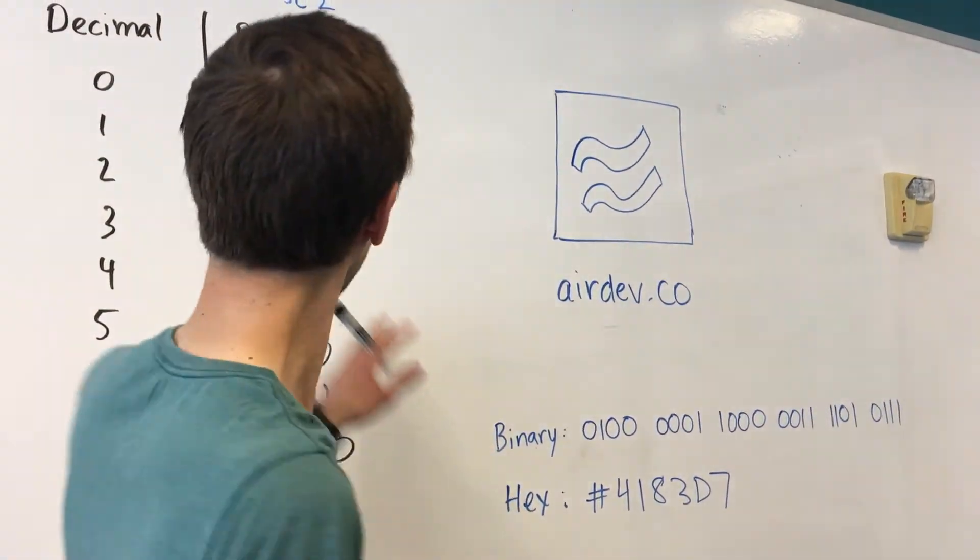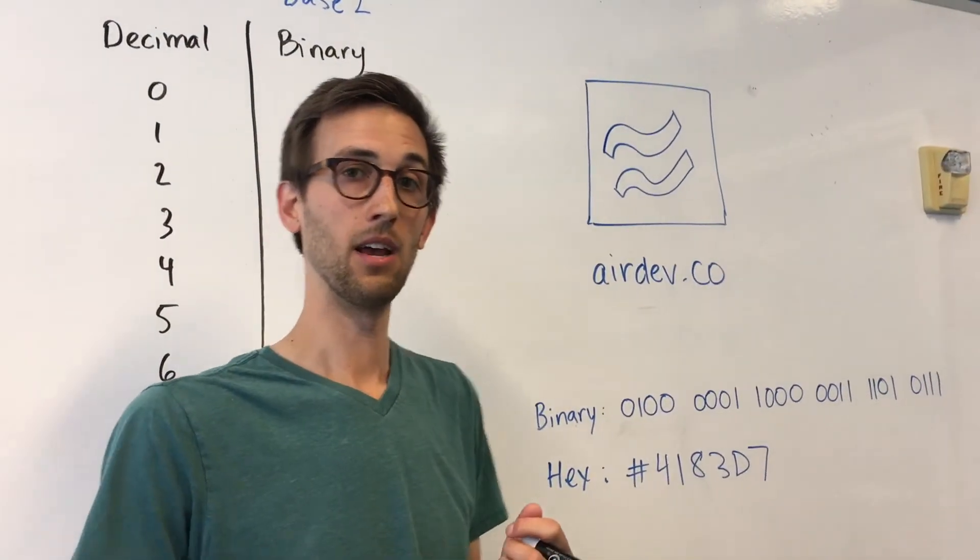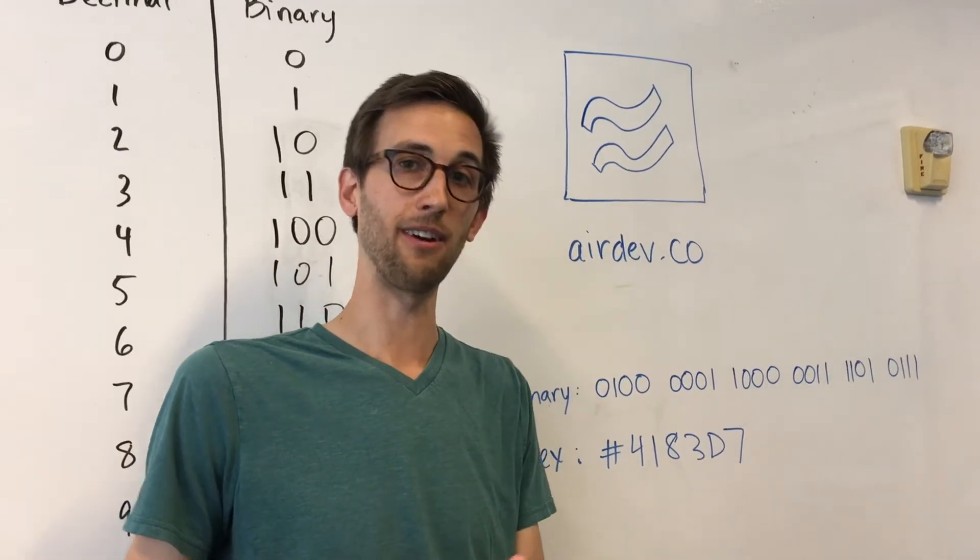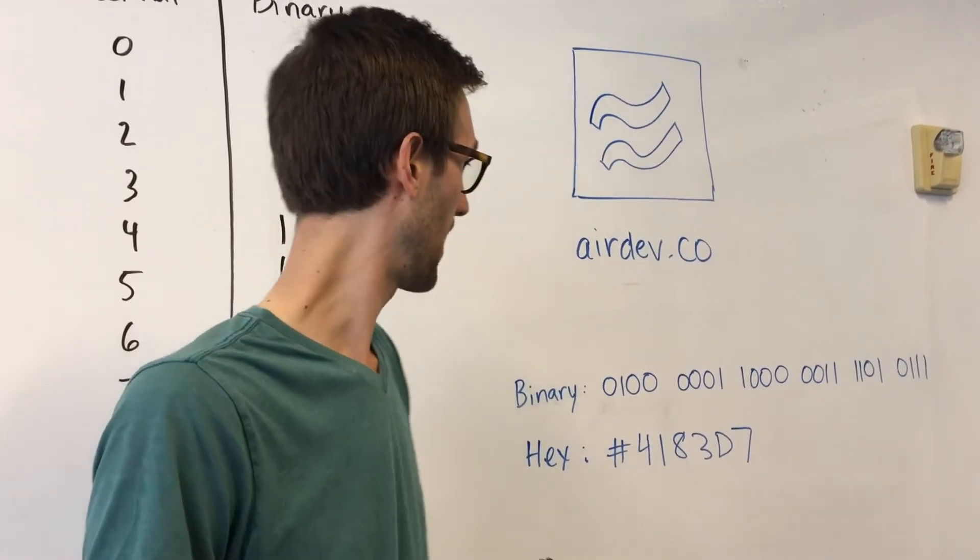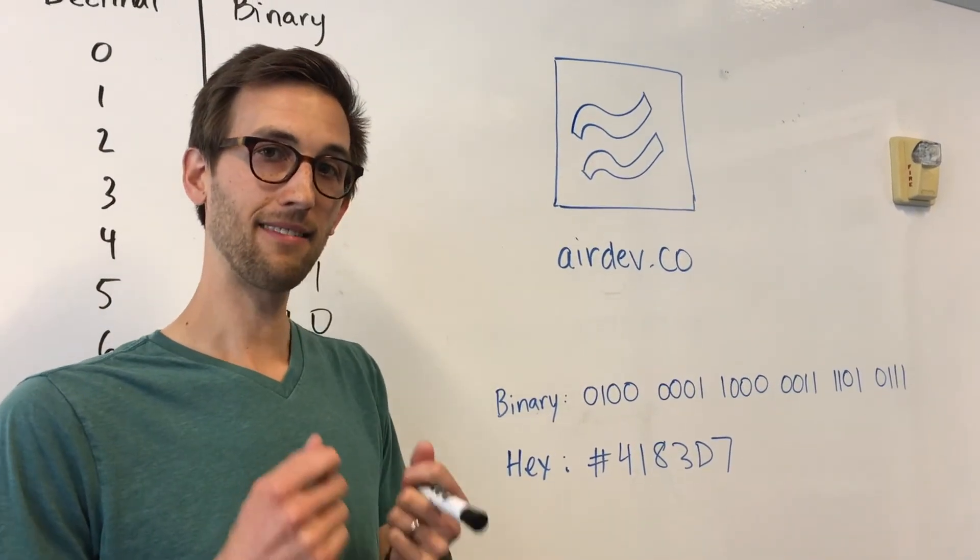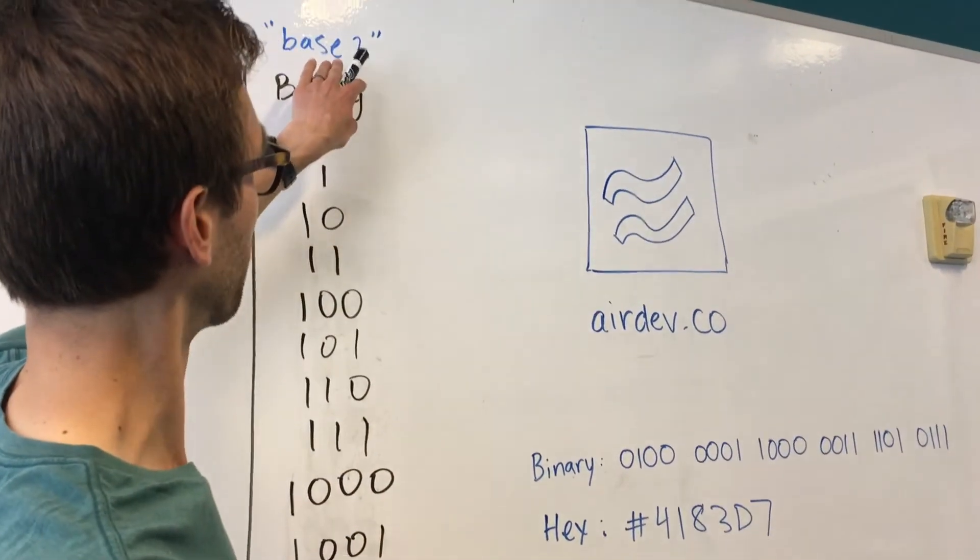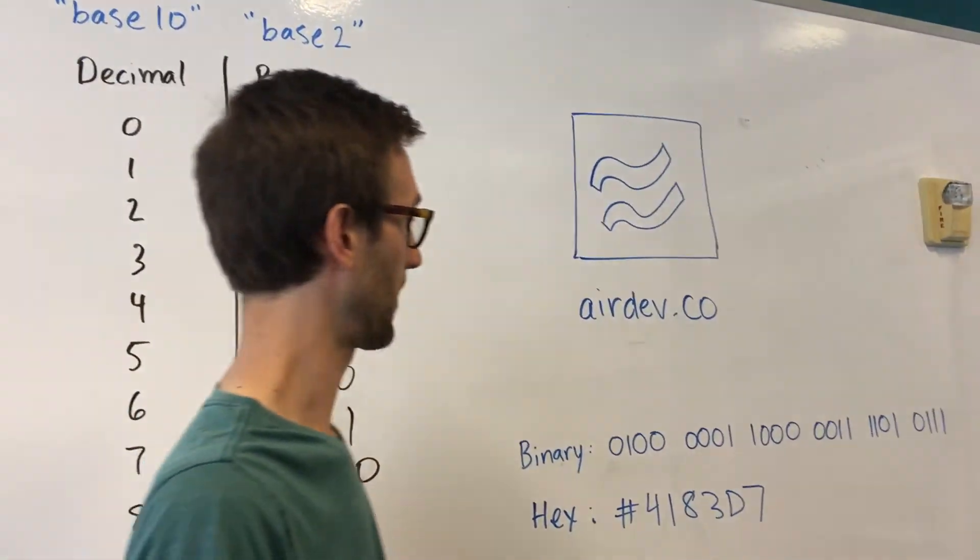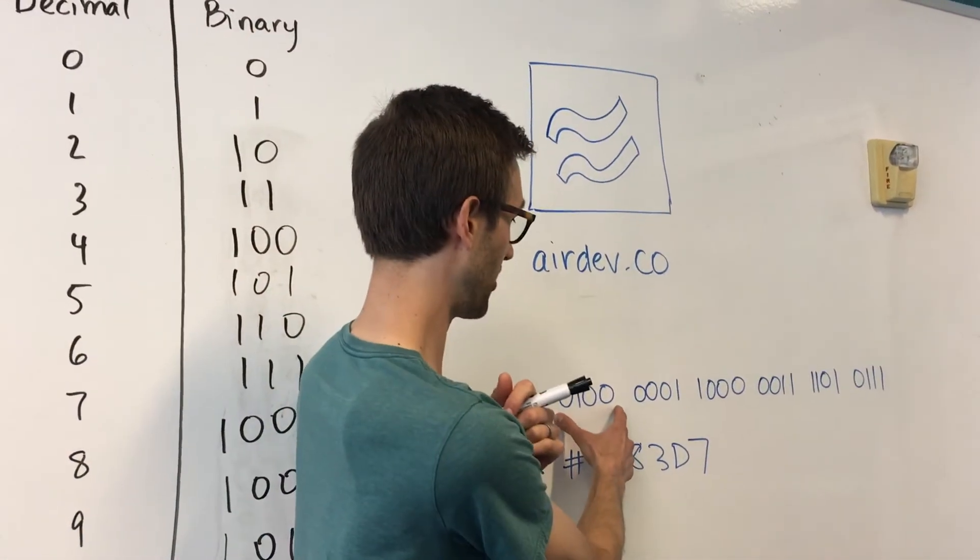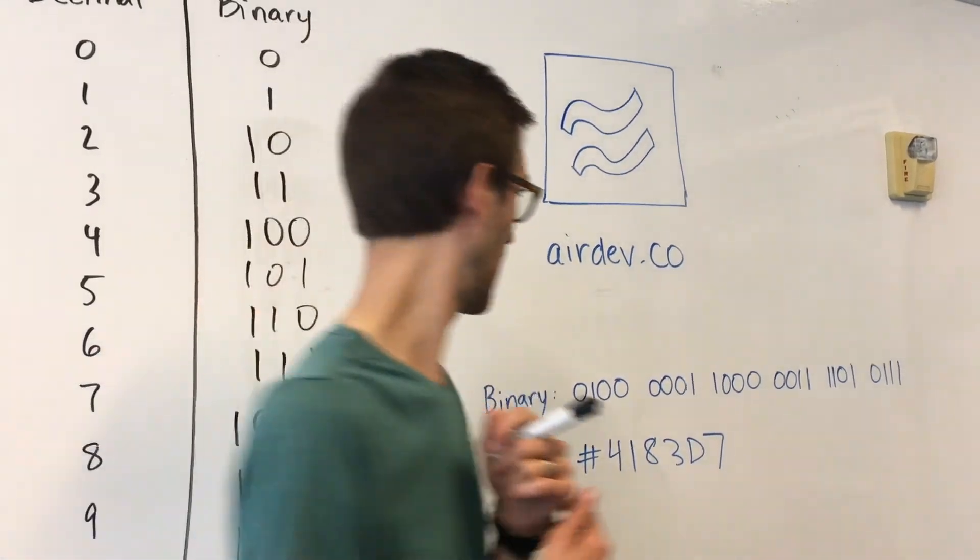Now the hexadecimal system is not base 2. It's actually base 16. So you have digits 0 through 9 followed by A through F before you have to start adding another digit. And the convenient thing about hexadecimal is that 16 is actually 2 to the 4th power. And so it maps very well to this base 2. The fact that it's 2 to the 4th power means that every 4 binary digits maps exactly to 1 digit in the hexadecimal system.